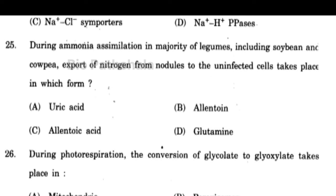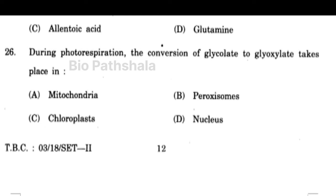Next question: during ammonia assimilation in the majority of legumes including soybean, export of nitrogen from nodules to uninfected cells takes place in which form? That is in the form of uric acid. Next question: during photorespiration, the conversion of glycolate to glyoxylate takes place in which organelle? The correct option is peroxisomes.